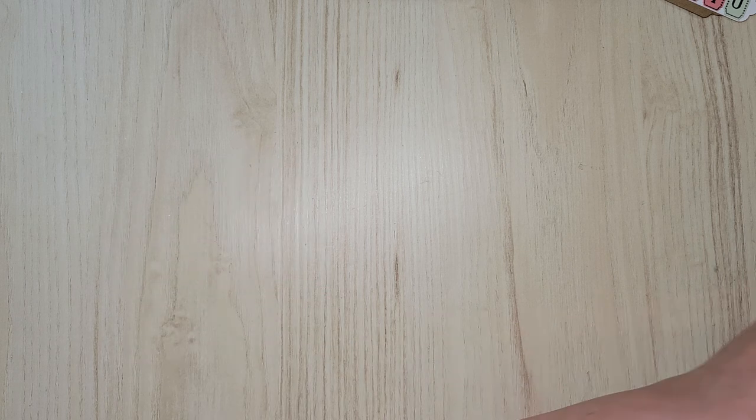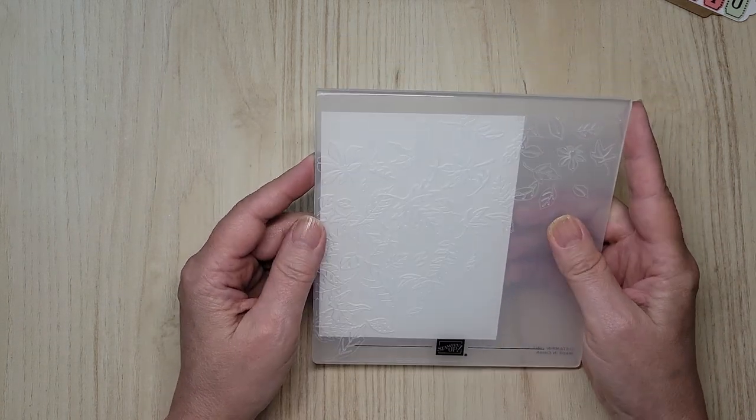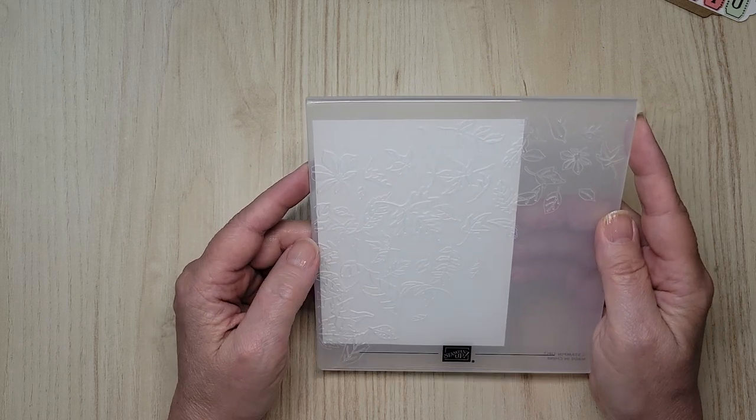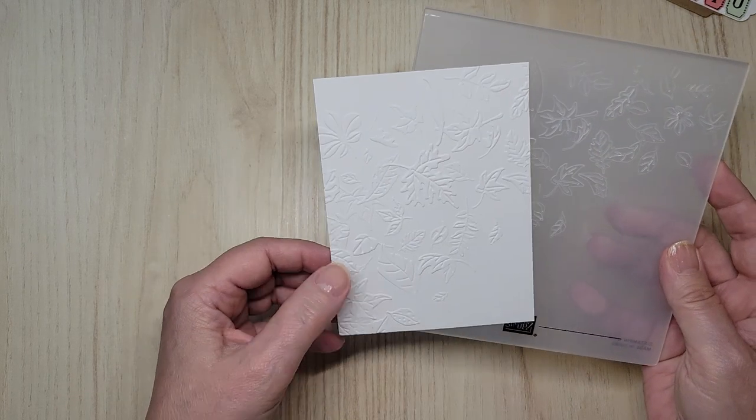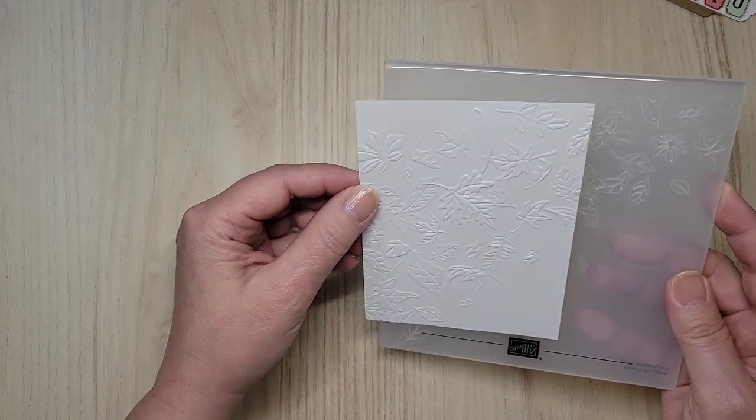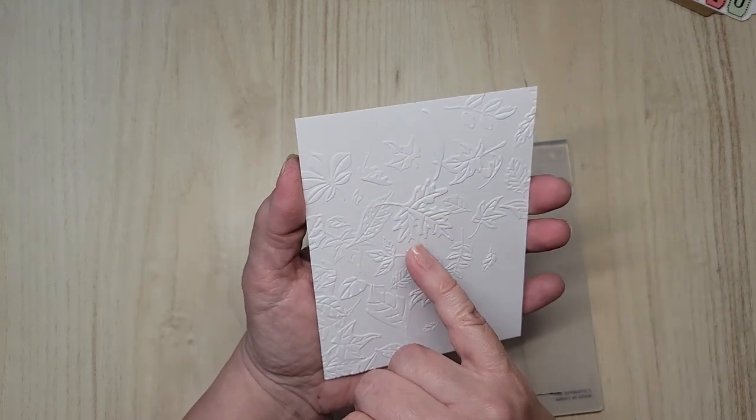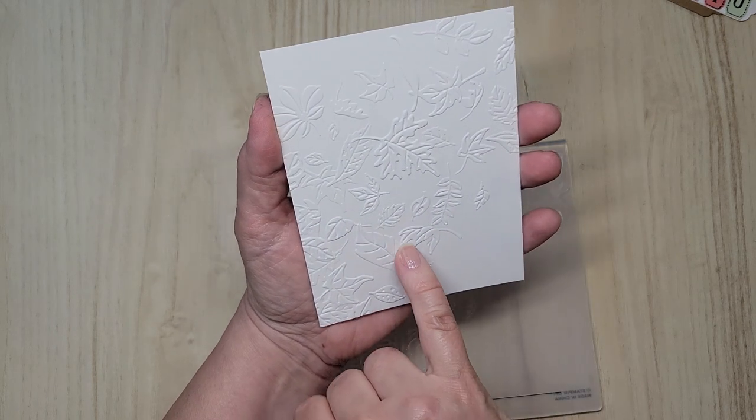The next thing is, if you haven't seen this folder, this is the leaf fall folder. And it's kind of cool. I'll show you the piece that I've already embossed. It has beautiful leaves all over. And I like the way, especially this one, look,